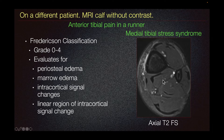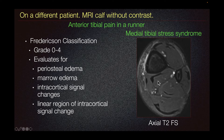Exertional compartment syndrome would typically present with muscle hyperintensity on fat-suppressed imaging, with or without muscular swelling, and it would typically involve one or more compartments. It can also occur simultaneously with the presence of medial tibial stress syndrome.